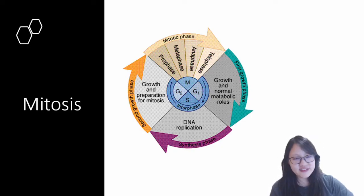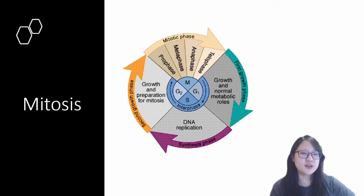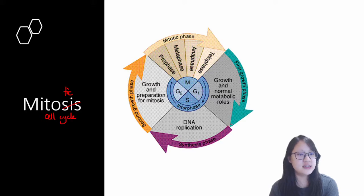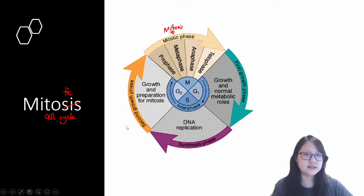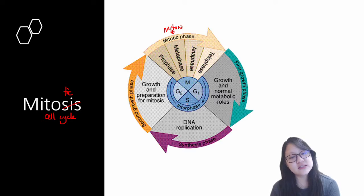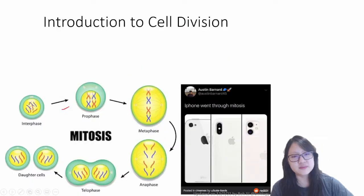Hello everyone and welcome to another video on chapter 5 part 1. This is about interphase and some introduction about what mitosis actually is. More accurately, this section should be named the mitotic cell cycle, because mitosis only covers a small section of the entire cell cycle. Before we talk about what happens during the rest of the cell cycle in a process called interphase, let's run through some introductory comments about cell division.